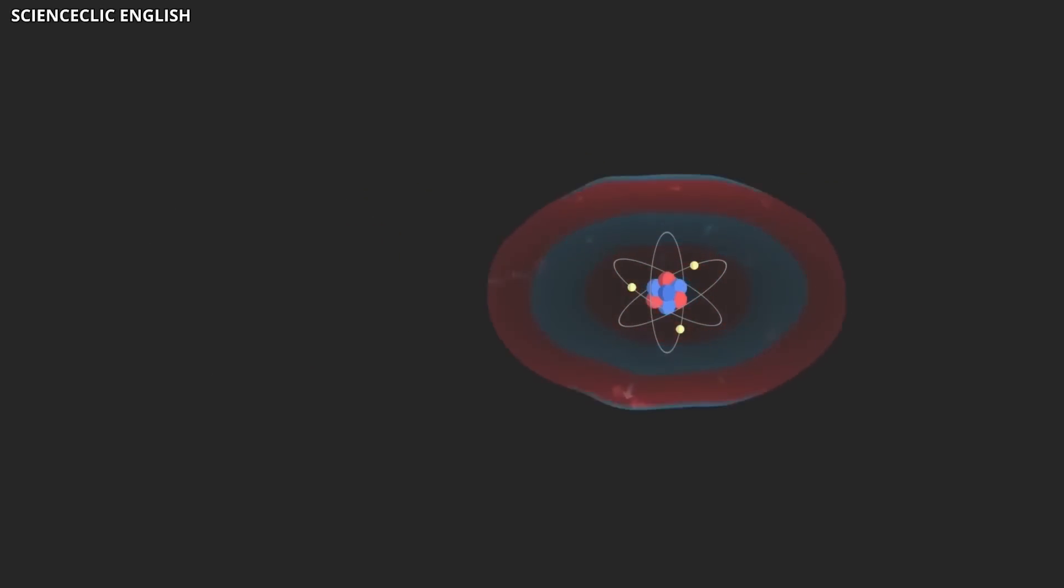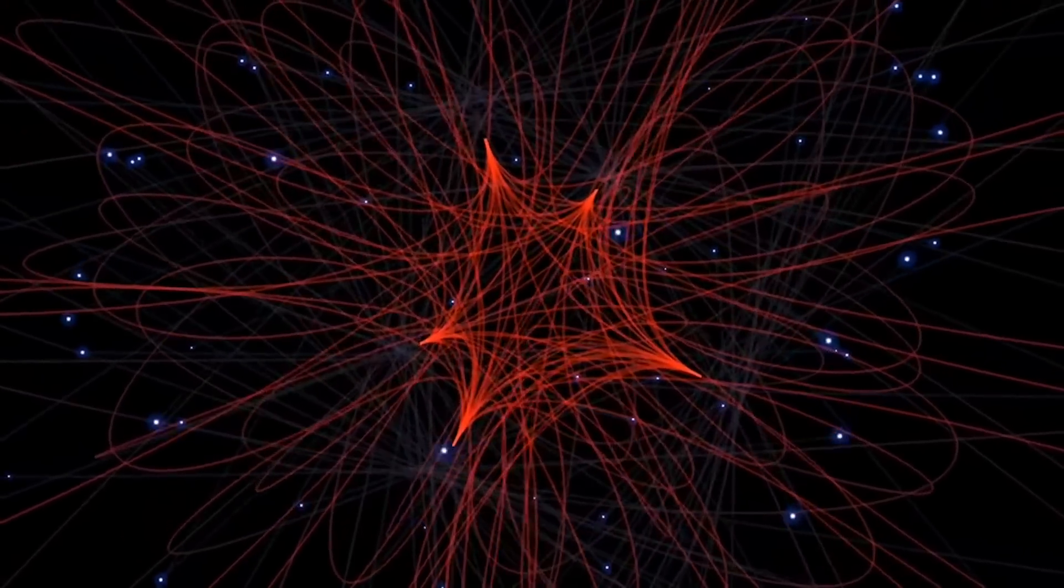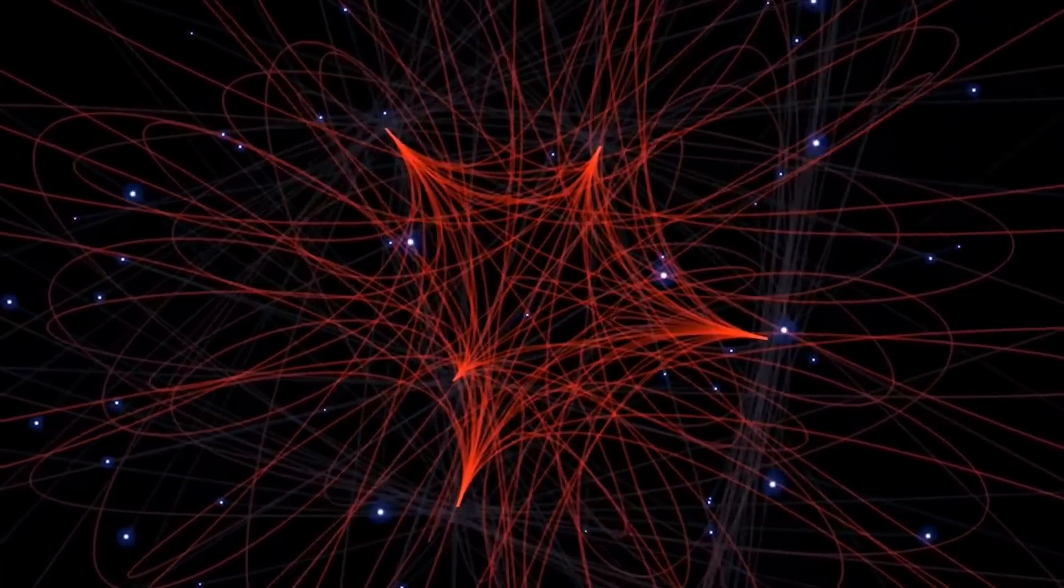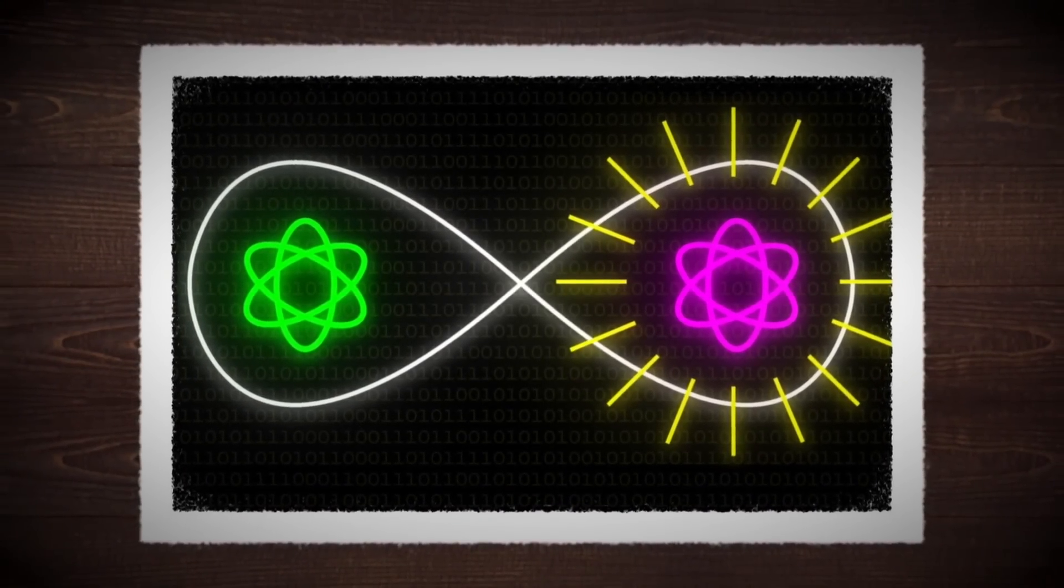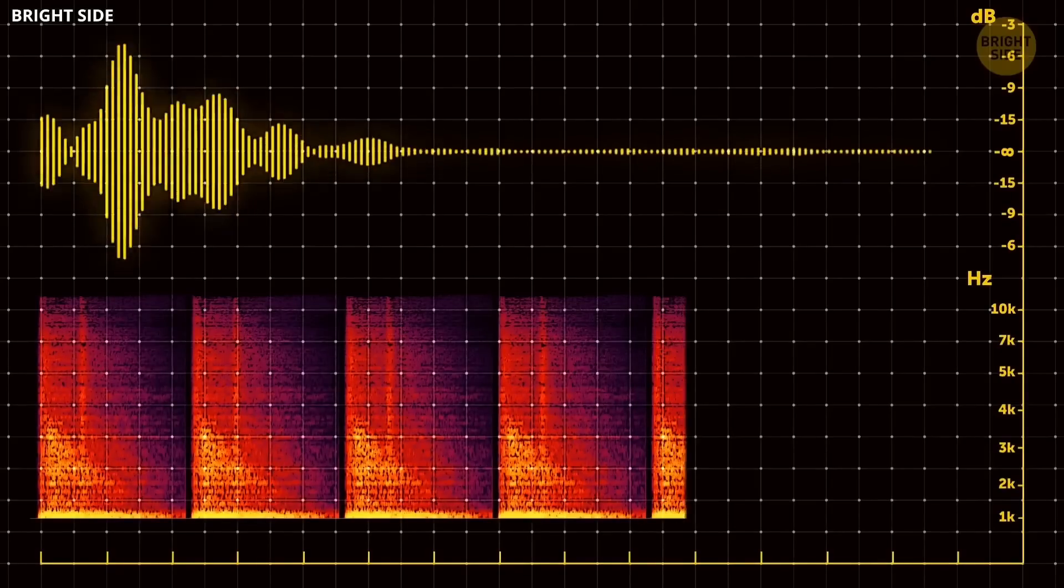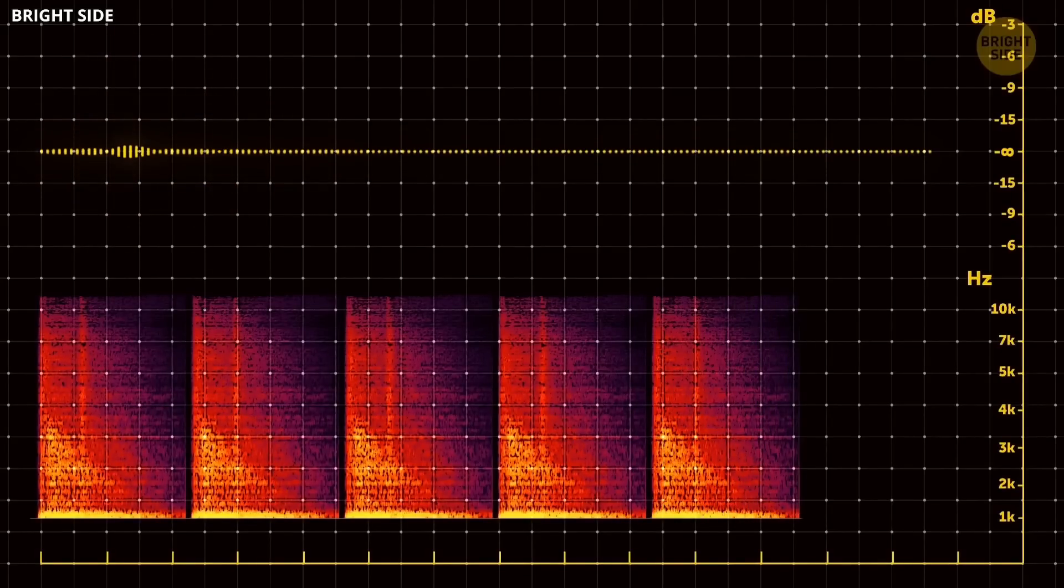You can entangle photons in various ways, allowing you to pack more information into them. The more photons you entangle, the more data you can convey. This makes quantum communication more efficient, enabling you to convey the same information in a shorter message.